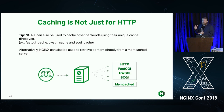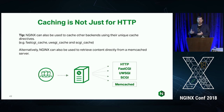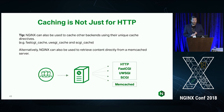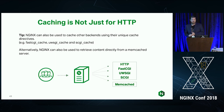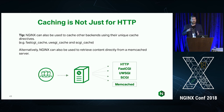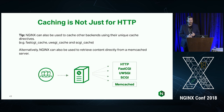Caching is not only for HTTP. If your back end uses FastCGI, uWSGI, SCGI, or memcached, those are all things you can use to cache the response. Essentially every caching feature added for HTTP is also added to all those other cache types.